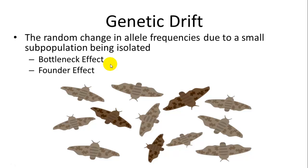Another event that breaks Hardy-Weinberg equilibrium is genetic drift — random changes in allele frequency due to a small subpopulation being isolated or a large portion of the population being removed. Two examples are the bottleneck effect and the founder effect. The bottleneck effect is where most of a large population is devastated, leaving a very small population that then grows again, changing allele frequencies. The founder effect is where a smaller group separates — perhaps going to an island — and begins to reproduce, likely with different allele frequencies.